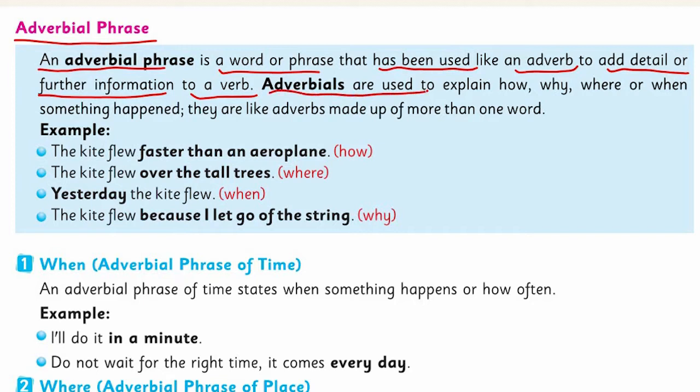Adverbial phrases are used to explain how, why, where, or when something happened. They are like adverbs, made up of more than one word. As I told you, a phrase is a group of words.